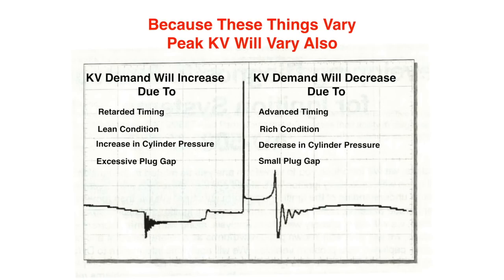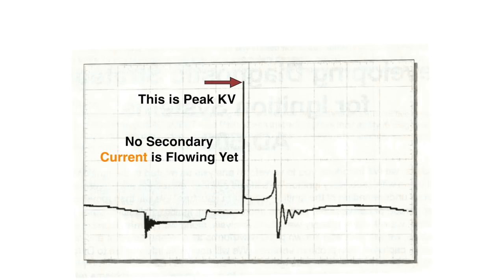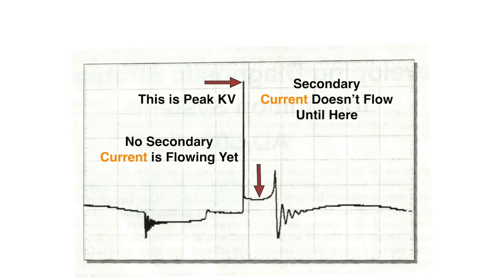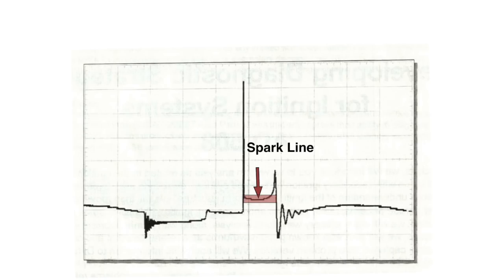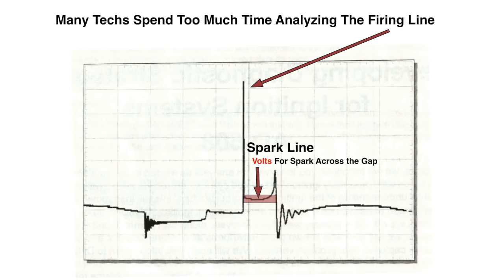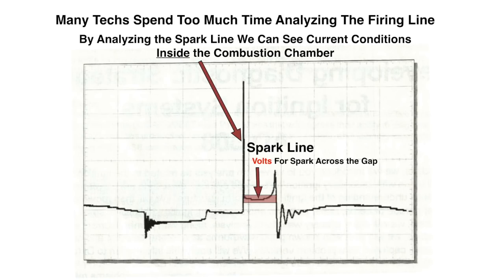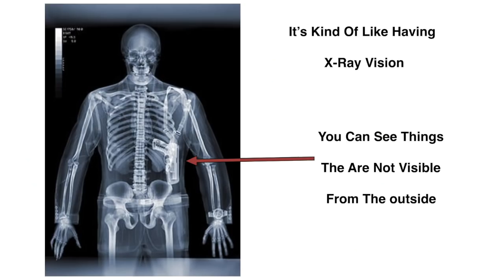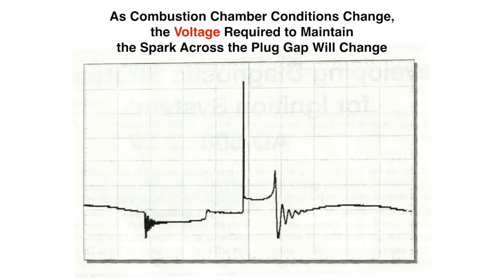This is peak kV. No secondary current is flowing yet — secondary current doesn't flow until we get to the spark line. We call that the spark line — volts for spark across the gap. Many techs spend too much time analyzing the firing line. By analyzing the spark line, we can see current conditions inside the combustion chamber — it's kind of like having x-ray vision. As combustion chamber conditions change, the voltage required to maintain the spark plug gap will change, and these changes will be represented as fluctuations on the spark line.